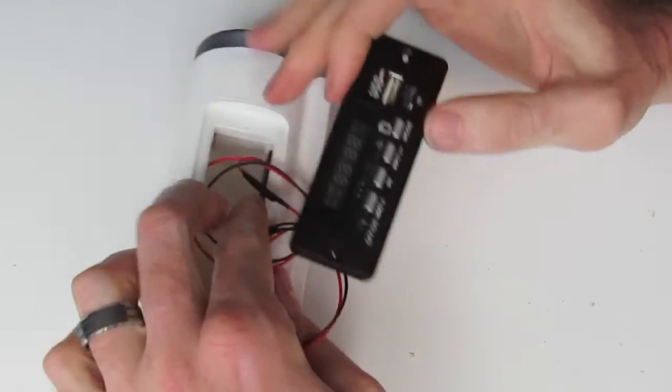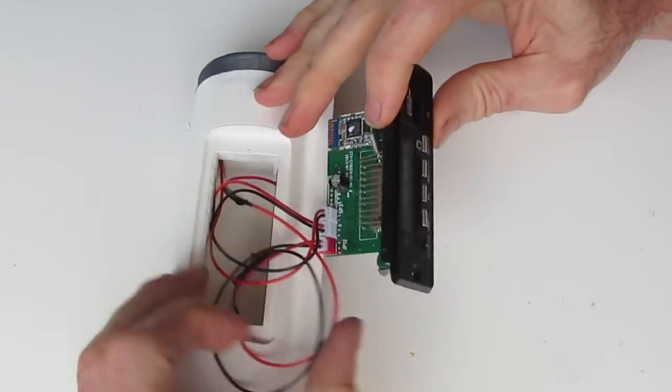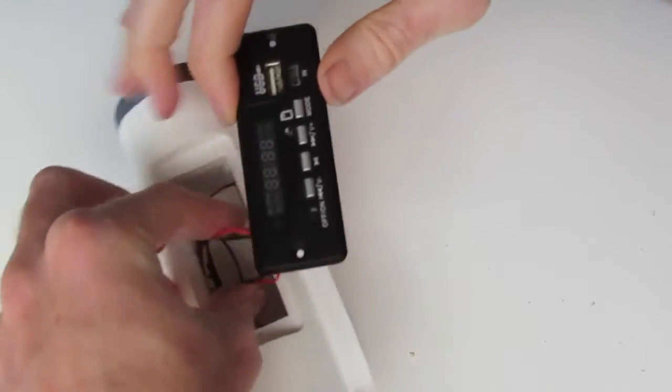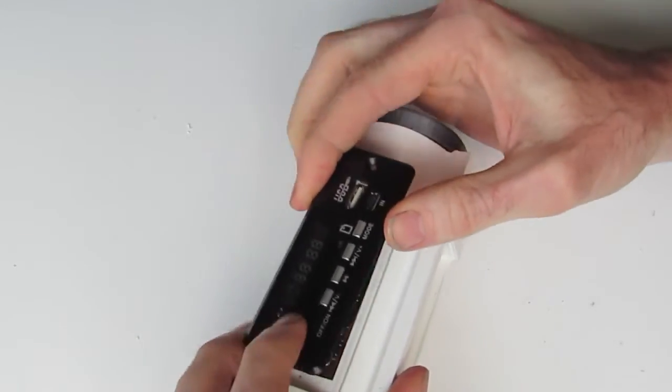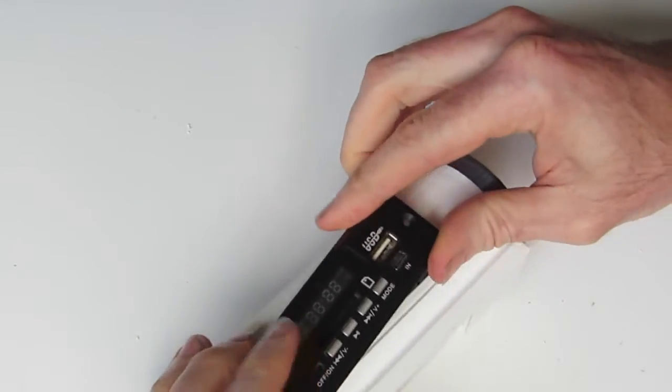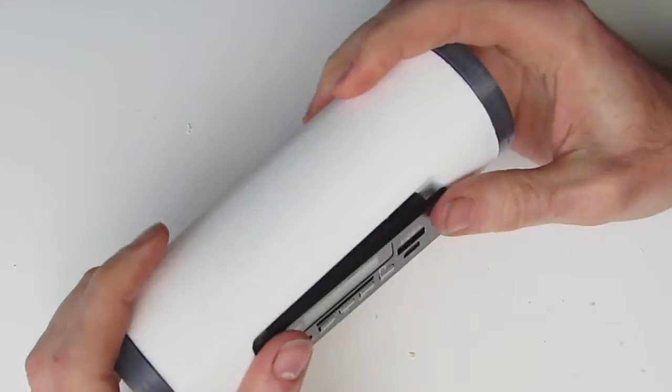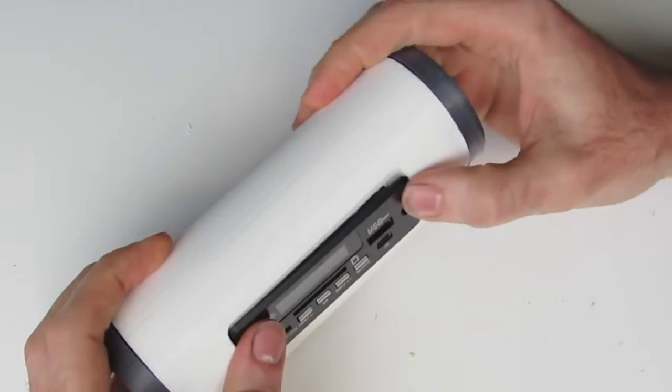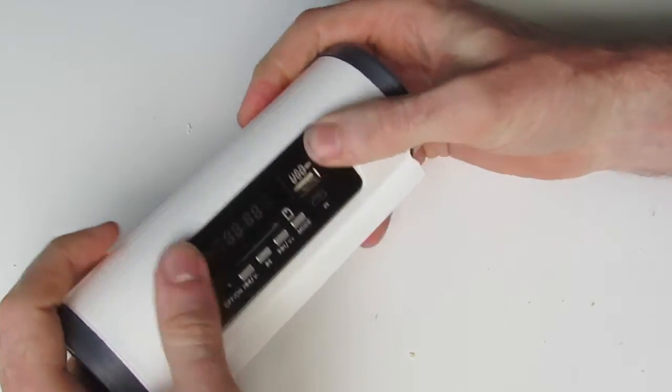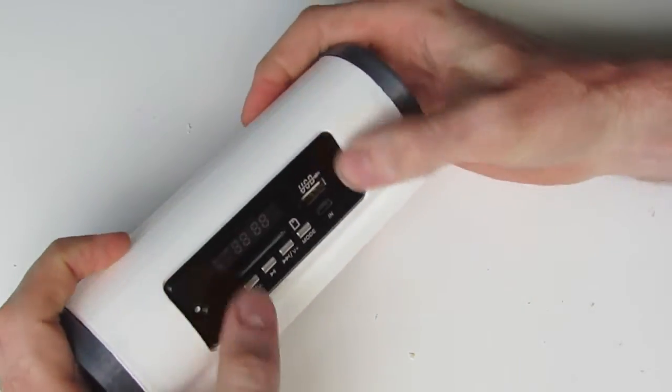Now you can just gently tuck all these wires out of the way. Angle the module in and just gently press. Press in there.